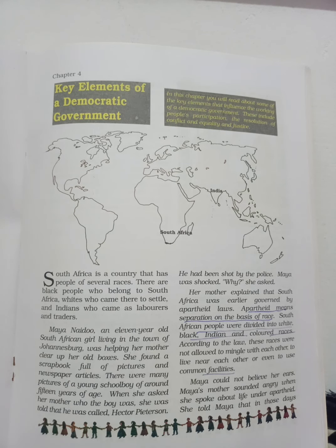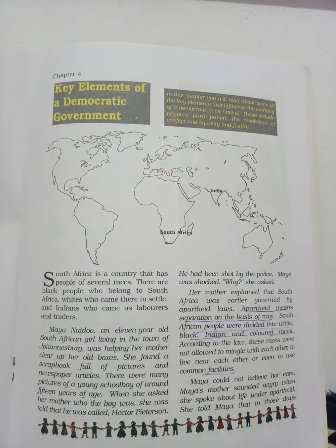Her mother explained that South Africa was once governed by apartheid laws. Apartheid means separation on the basis of race — that means separation based on color. South African people were divided into white, black, Indian, and colored races according to the law. These races were not allowed to mingle with each other, to live near each other, or even to use common facilities. South Africa once had this apartheid situation — discrimination based on color.